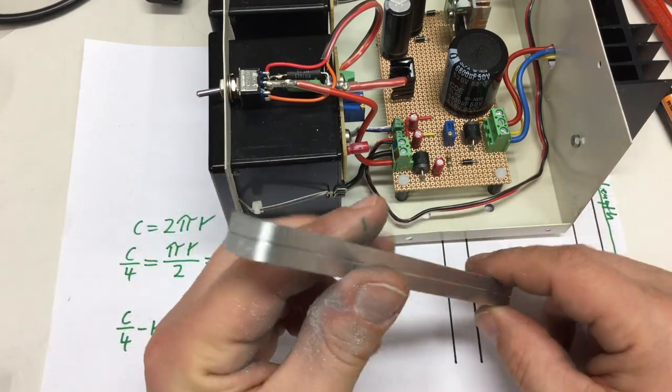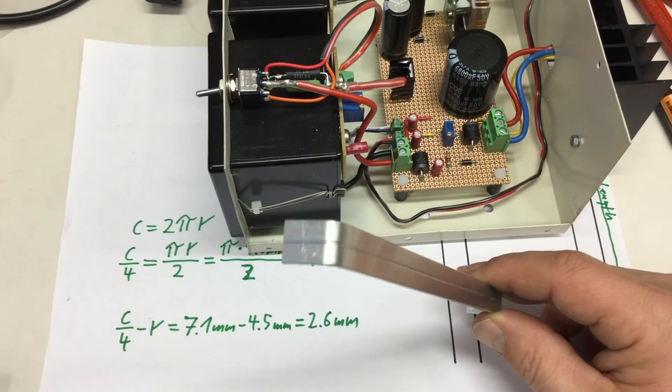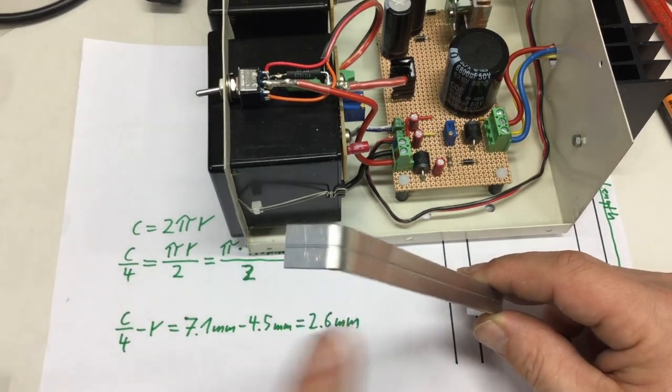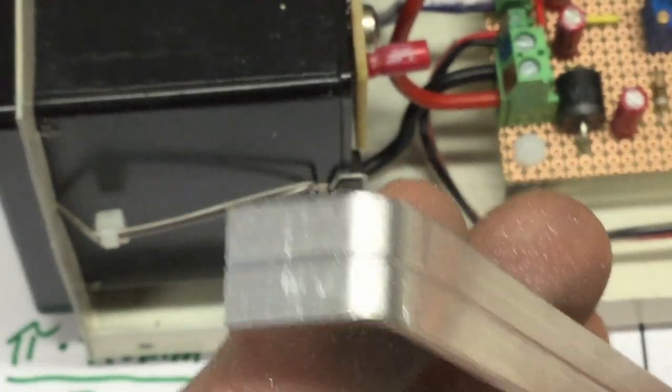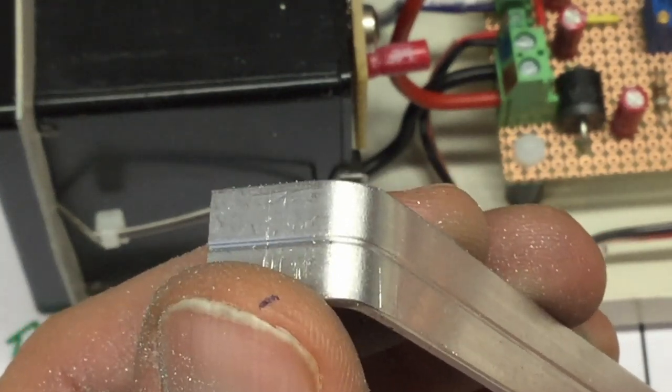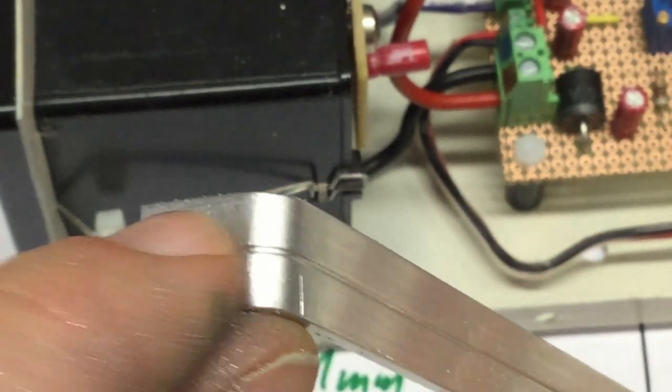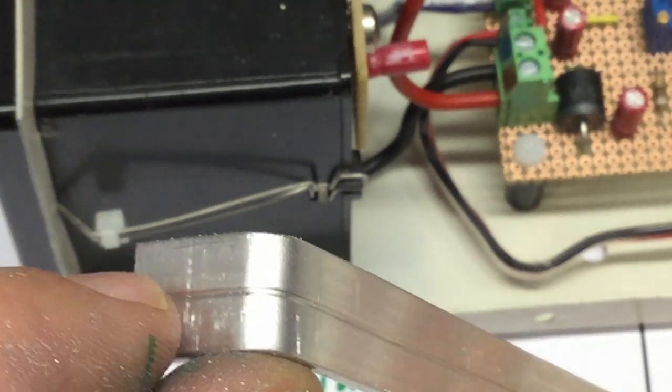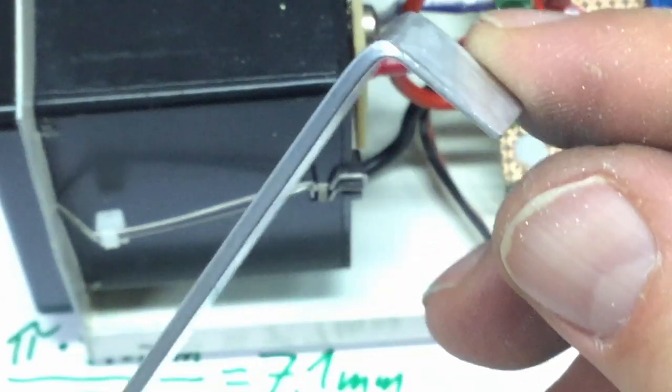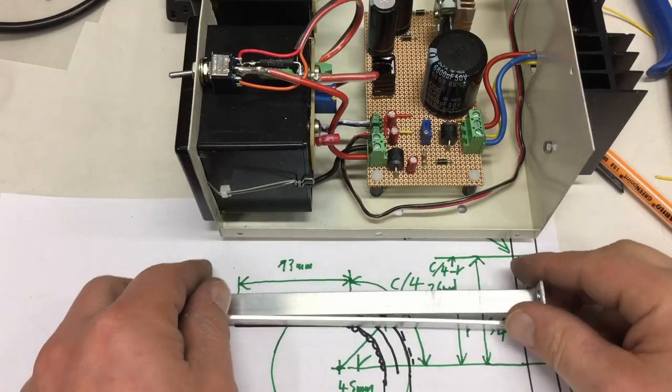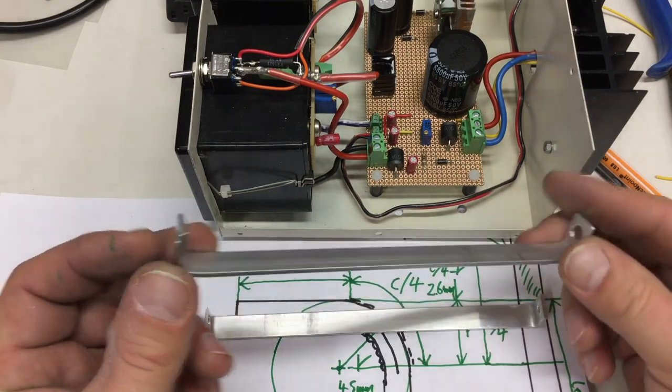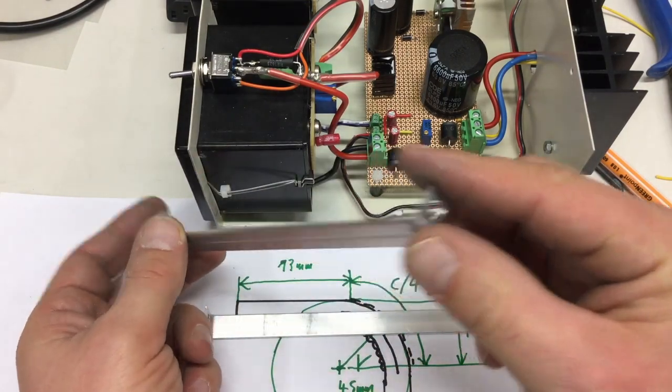One thing - if you need to put holes into the things, put the holes in after you bend it. Because as you bend it, your holes will also distort and become ovals. And then you have even more to file.